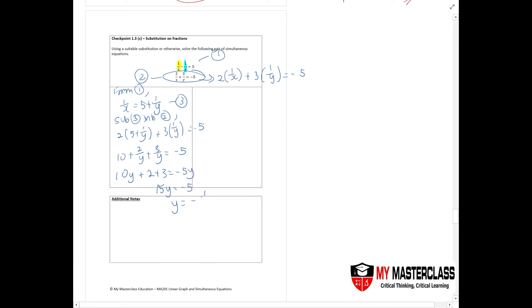So y = -1/3. Now substitute this y = -1/3 into equation 3. So you get 1/x = 5 + 1/(-1/3). You should be getting an answer of 2.